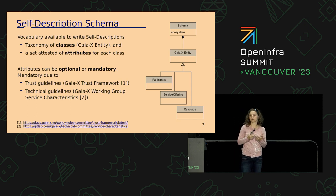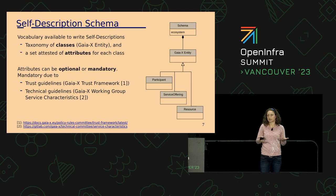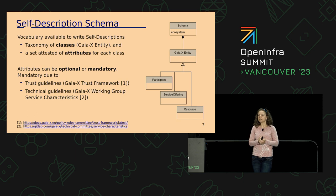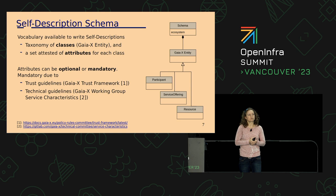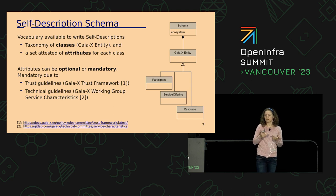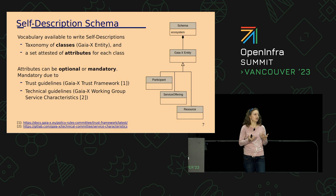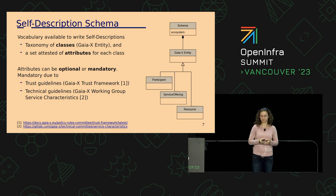A participant is an entity who offers or consumes a service — so a provider or a consumer. A service offering is what the name says: it's the service which is offered. And the resource is a building block for a service offering which is not available for order. You need this building block in order to describe your cloud service in more detail. This could be, for example, the data center where the service is hosted on, the data itself, or the software. All these artifacts can be important for customers, so you need a way to describe these entities.